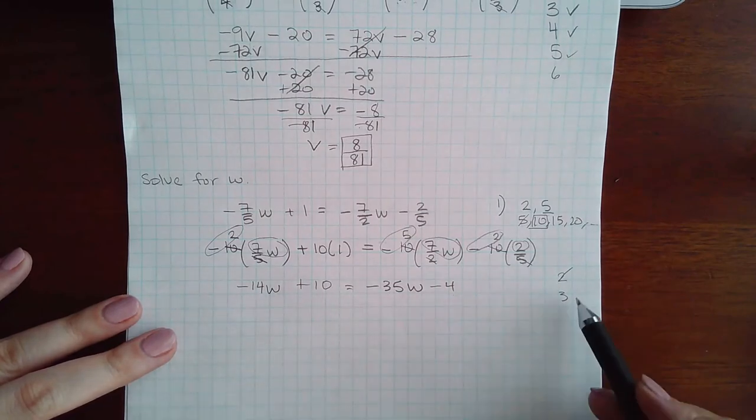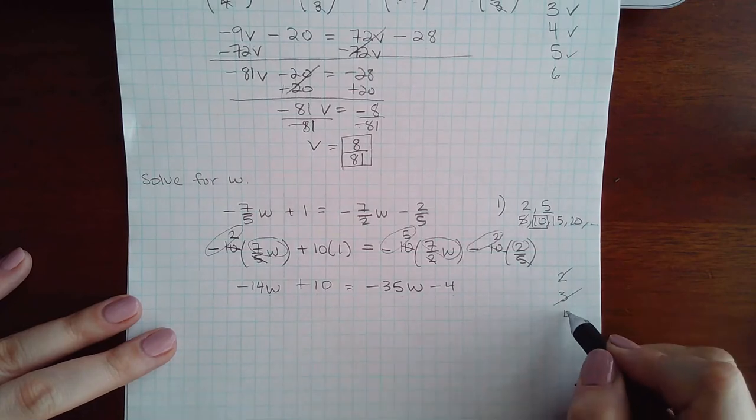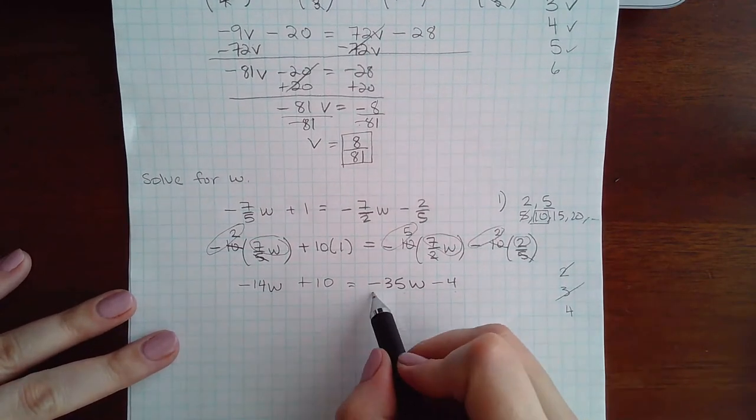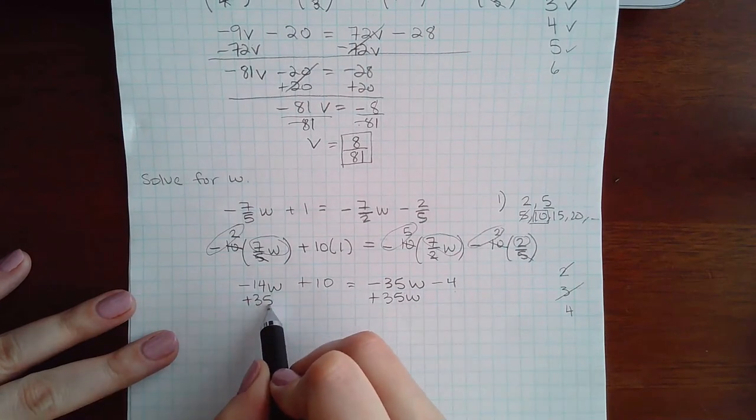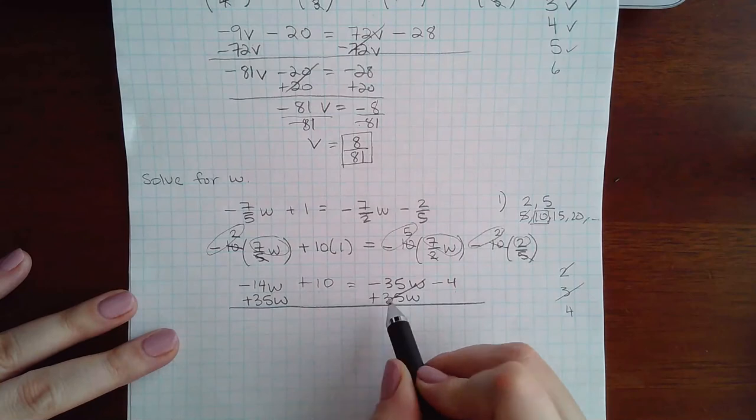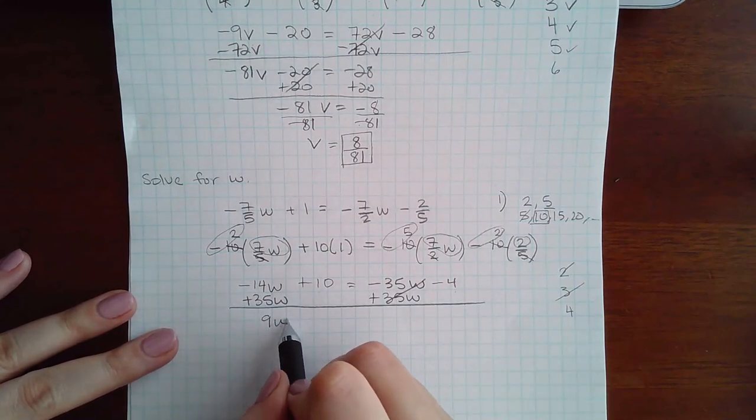Step 4 is to move the variables to one side, so I'm going to add 35w to both sides and I get 9w positive.